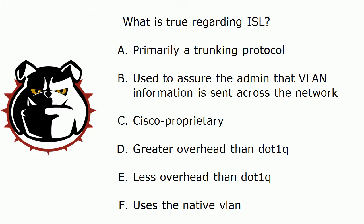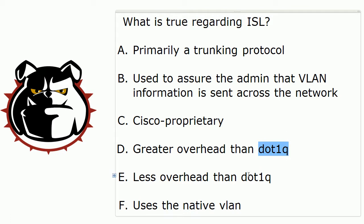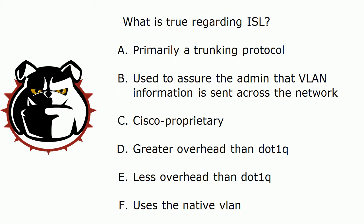ISL is primarily a trunking protocol, and of course you had a hint there when I was mentioning comparisons to IEEE 802.1Q — which we usually just say .1Q. So A is true: it's primarily a trunking protocol. B really refers more to VLAN Trunking Protocol, VTP. ISL is indeed Cisco proprietary, and it doesn't even run on all Cisco switches including some very popular lab models. The problem with ISL is that it does have greater overhead than .1Q because it does not use the native VLAN.